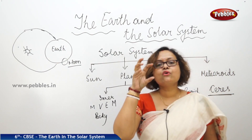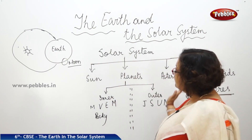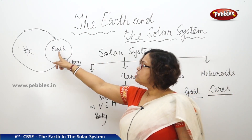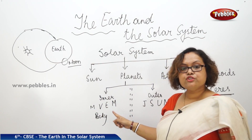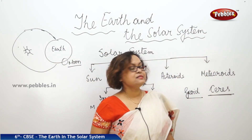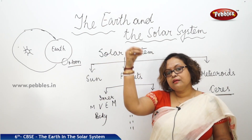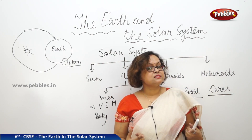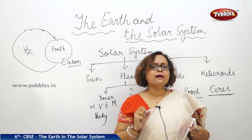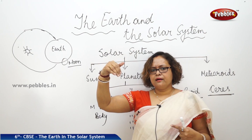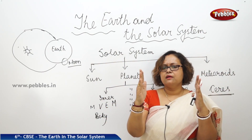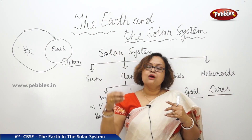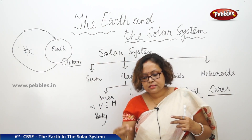Meteoroids are small rocks moving in the solar system. When they come near any planet, you know that planets have their gravitational pull. Due to the gravitational pull of the planets, these meteoroids come into our sky. When they enter Earth's atmosphere, we have oxygen, and oxygen helps anything to burn. So whenever they enter Earth, oxygen causes them to catch fire, and we see what looks like a star coming down — we call it a shooting star. We see it burning as it comes down.